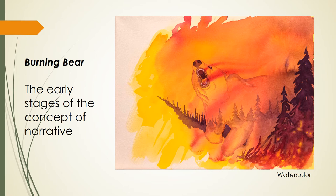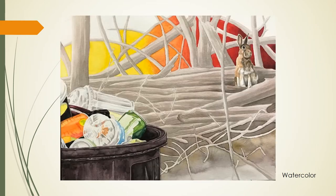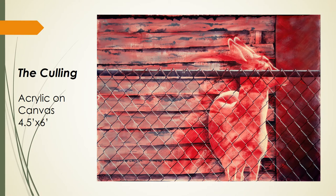The early stages of my concept of narrative began as I became more connected to the valley and the wildlife that live here. I began to learn about issues and events that directly affect the animals of this area, like the consequences the animals face when humans start a forest fire. I began to use color to tell the story, allowing the background to speak for the animal.